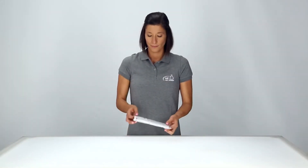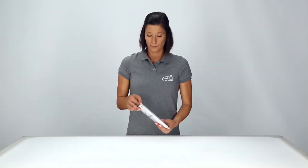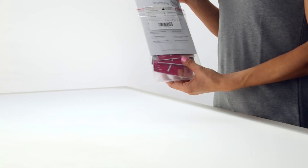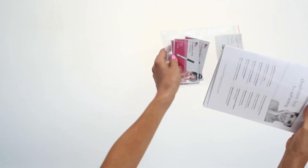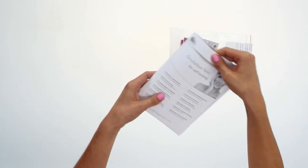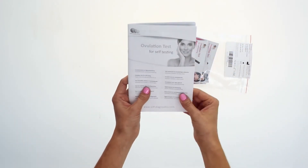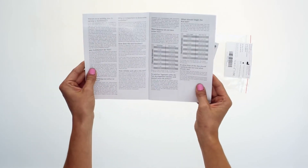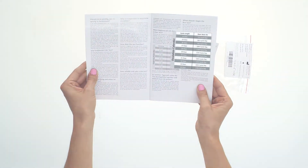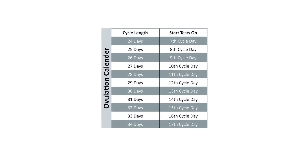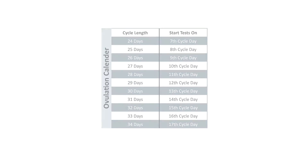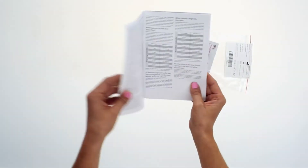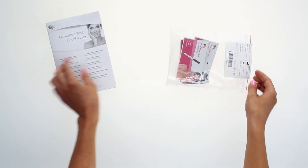You can become pregnant for approximately five days of your cycle. You should begin performing the test on the days before you expect to ovulate. Use the table provided to help determine when you should start testing. Examine the table and read all the instructions carefully before starting the test.